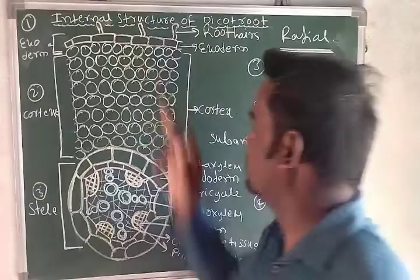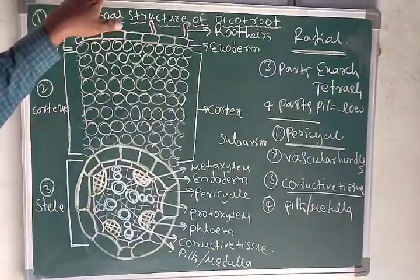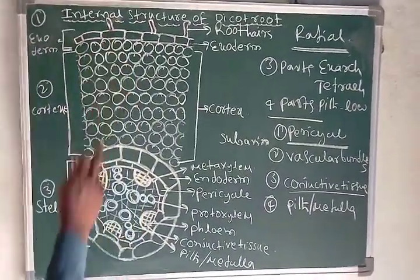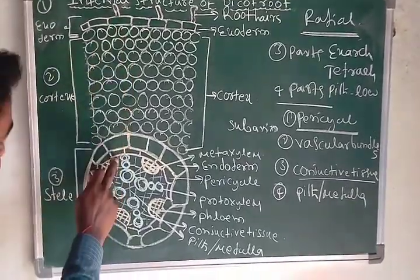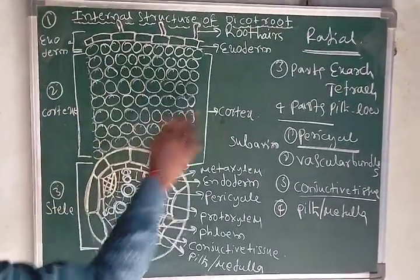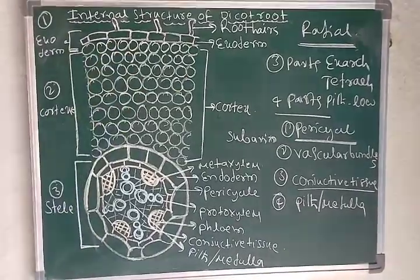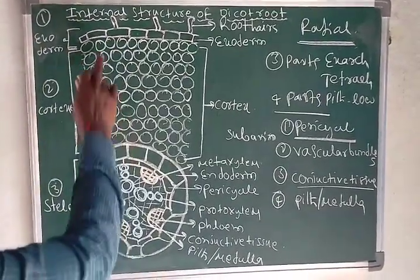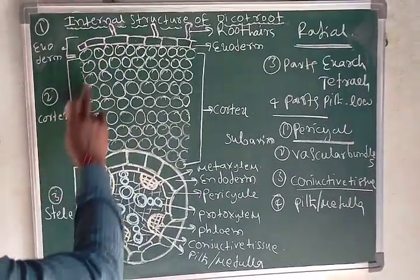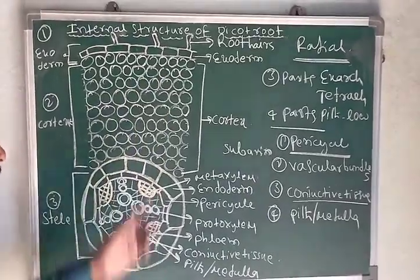The exoderm also gives protection to the inner tissues. Next, the space between the exoderm and stele is called the cortex — the second part of the internal structure of the dicot root. The cortex contains mainly parenchyma cells with intercellular spaces.